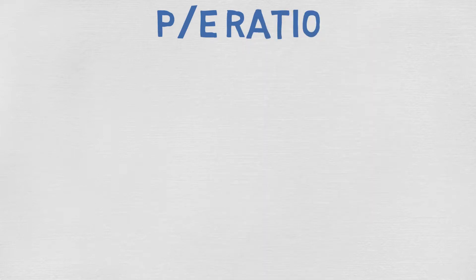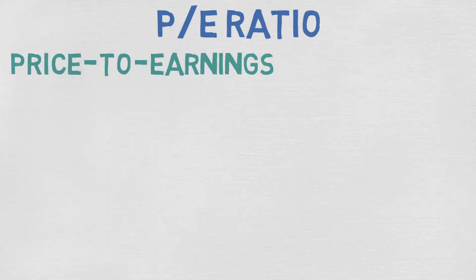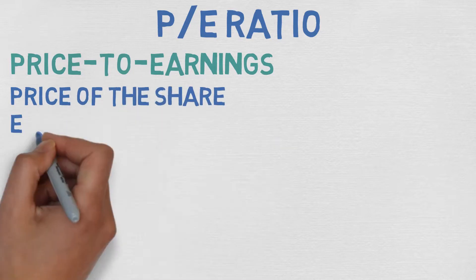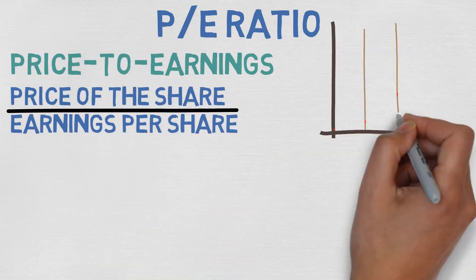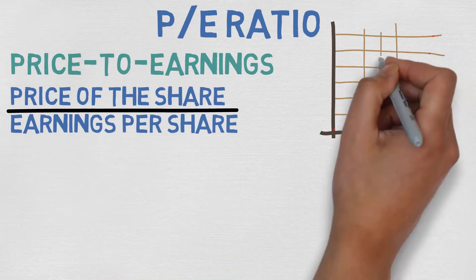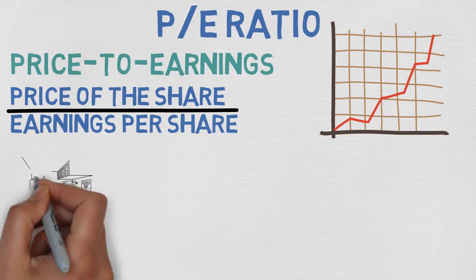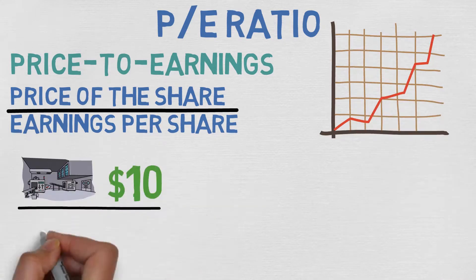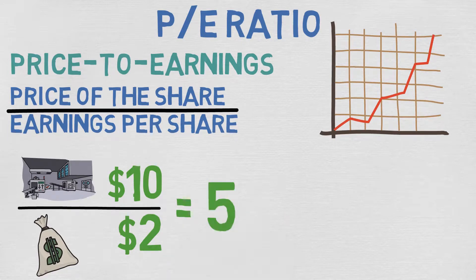So what does the PE ratio mean? It comes from the words price to earnings, which means the price of the share divided by earnings per share. The price used is the market value per share. For example, if a share is $10 and earnings per share are $2, the price to earnings ratio is 10 divided by 2, which equals 5.